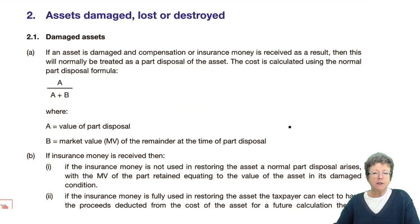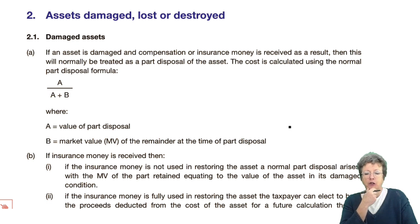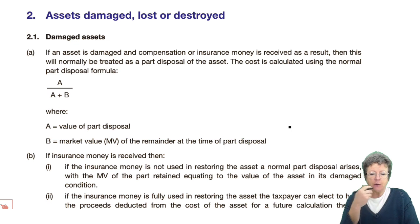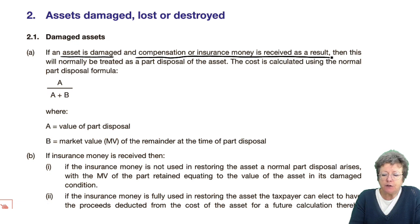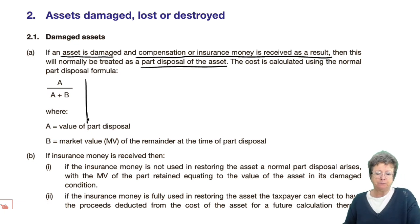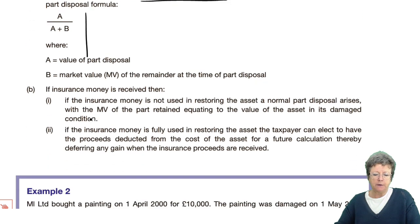There is one aspect we didn't deal with when we dealt with individuals — it is very similar for companies and individuals, so we're dealing with it here. What happens if we've got a damaged, lost, or destroyed asset? If an asset is damaged and compensation or insurance money is received as a result, then this is treated as a part disposal using the same A over A plus B formula. So if you damage something and get insurance money, it's a part disposal.